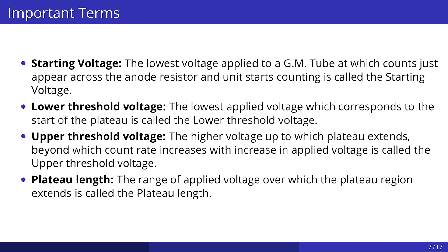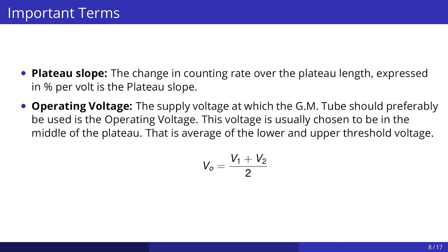The lowest voltage applied to a GM tube at which counts just appear across the anode resistor and the unit starts counting is called the starting voltage. The lowest applied voltage corresponding to the start of the plateau is called the lower threshold voltage. The higher voltage up to which the plateau extends — beyond which count rate increases with applied voltage — is called the upper threshold voltage. The range of applied voltage over which the plateau region extends is called the plateau length. The change in counting rate over the plateau length expressed in percent per volt is the plateau slope. The supply voltage at which the GM tube should preferably be used is the operating voltage, and this is usually chosen to be in the middle of the plateau — that is, the average of the lower and upper threshold voltages.